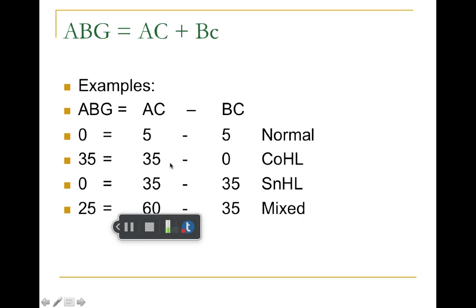Example two: the air conduction threshold is 35 dB — abnormal, because it's worse than 20 — but the bone conduction score is normal. A normal bone conduction score means the inner ear is normal. The air conduction score is abnormal, creating a gap between air and bone conduction scores. This indicates a conductive hearing loss — a problem in the outer ear or middle ear — because the bone conduction came back normal, meaning the inner ear is okay, but the air conduction was abnormal.